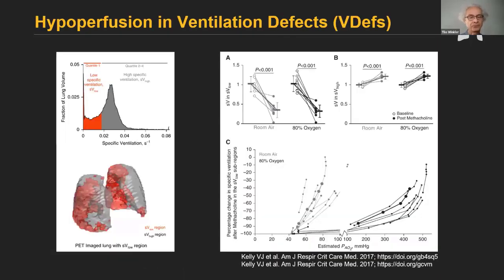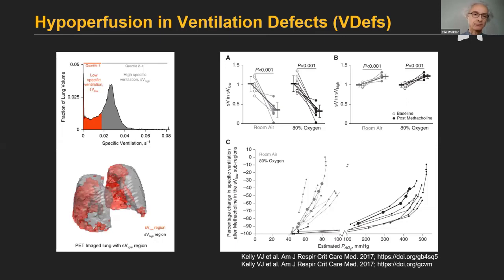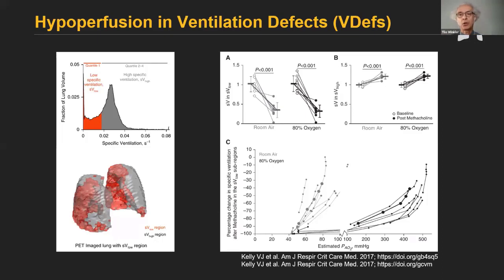Since we have not only ventilation images but also perfusion, we noticed quite early that within the ventilation defect there is always hyperperfusion. It would be reasonable if airway obstruction leads to a decrease in alveolar oxygen partial pressure and that eventually leads to hypoxic vasoconstriction. So we designed a study where we took the lower quartile of specific ventilation as potential ventilation defects, and added a set of images at high oxygen — 80% oxygen — to increase the oxygen partial pressure at the alveolar level.